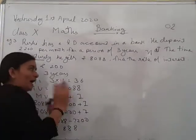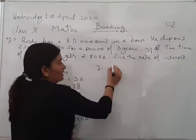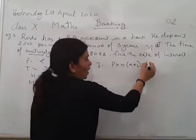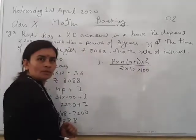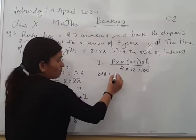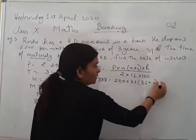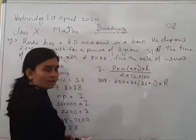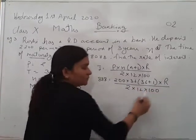Now as yesterday I told you that I is P into N, N plus 1 into R upon 2 into 12 into 100. Now put the value there. It is coming 888, P is 200, N is 36, 36 plus 1 into rate. Rate we have to find out, so write it as R upon 2 into 12 into 100.